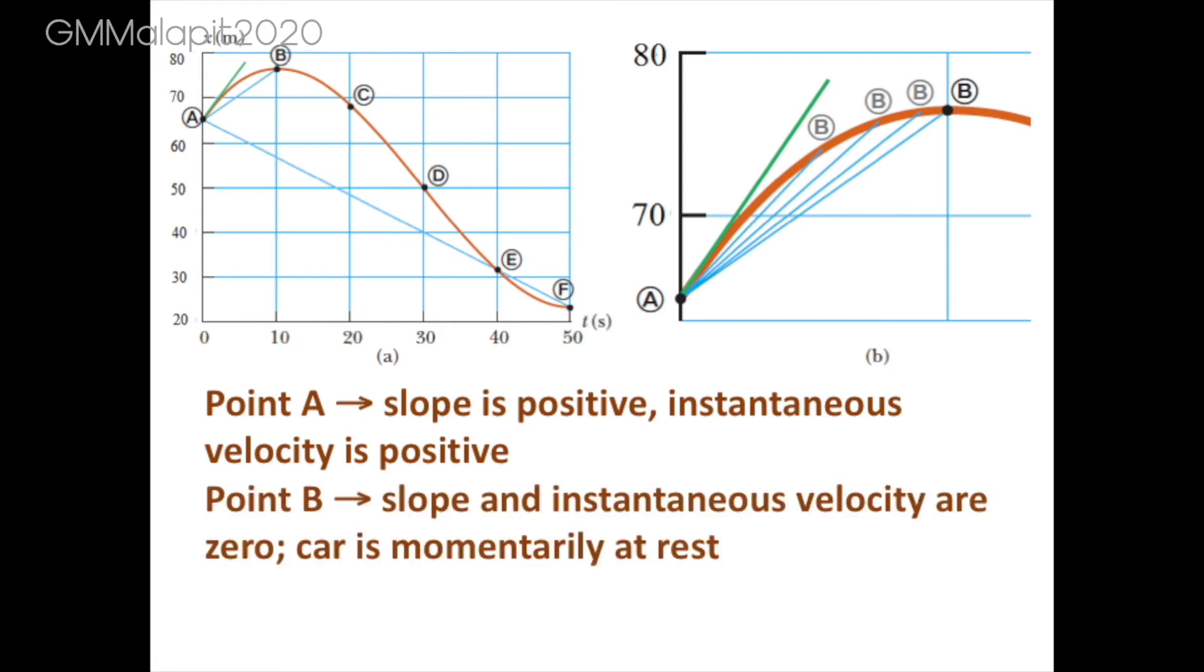At point B, the slope and instantaneous velocity are zero, and we can safely say that the car is momentarily at rest.